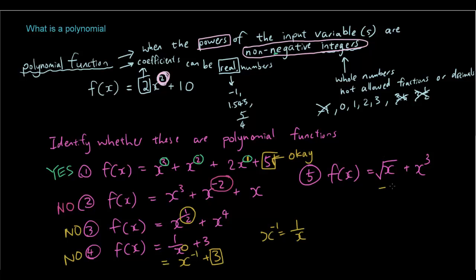And, x to the power of a half is the same thing as the square root of x. So, this is also not allowed. Not a polynomial. So, the only one that is a polynomial in this question is number one. Number one is a polynomial function.